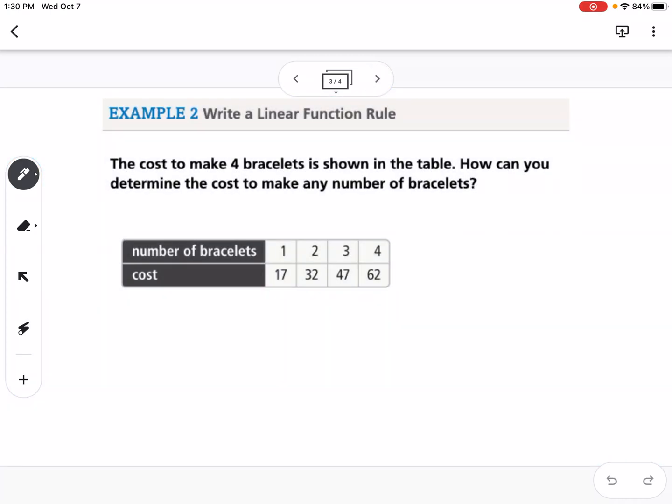Okay, our next example says, the cost to make 4 bracelets is shown in the table. How can you determine the cost to make any number of bracelets? So what we want to do is we want to write a function for this situation. So I'm going to use two different colors here. Red is going to be our change in y. So this is our y value. If I go from 17 to 32, I'm going up 15. If I go from 32 to 47, I'm going up 15. And if I go from 47 to 62, I'm going up 15.